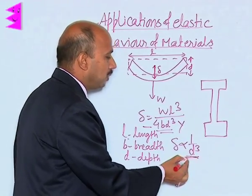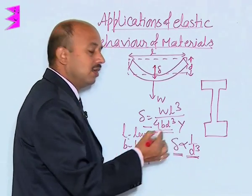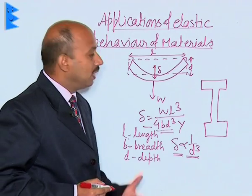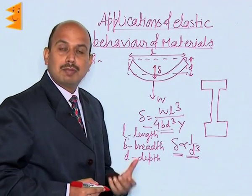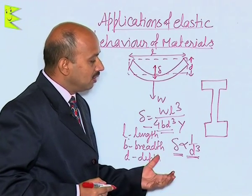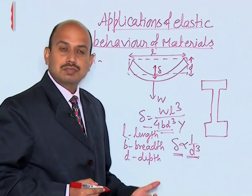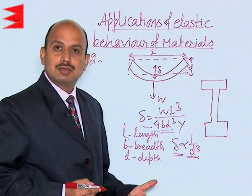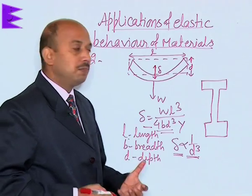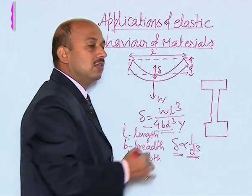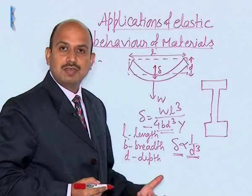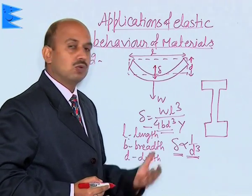If you increase the depth of the beam, the depression will be very small, so by increasing depth we can reduce depression. However, there is a disadvantage: if you increase the depth to a large extent, the beam may bend. To avoid this, I-shaped girders are used. These I-shaped girders have a large load-bearing surface and do not bend.